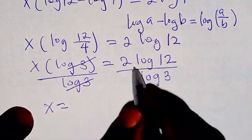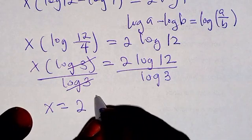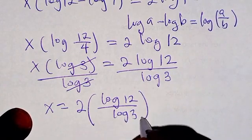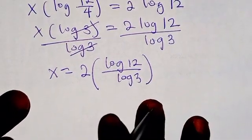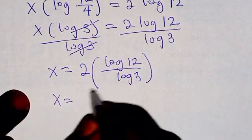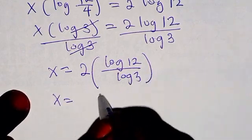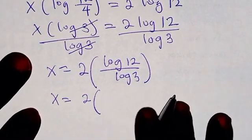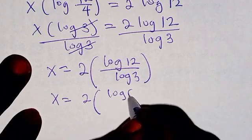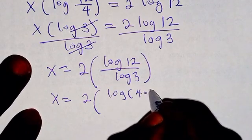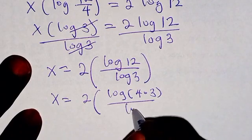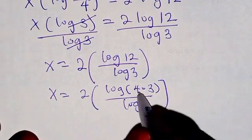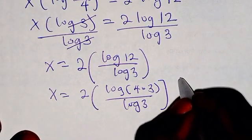After cancelling log 3, we get x equals 2 times log 12 over log 3. Now log 12 can be split as log of 4 multiplied by 3, giving log 4 times 3 over log 3. Are you following?